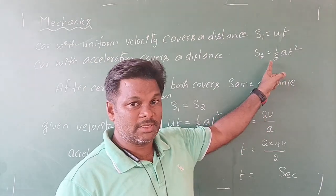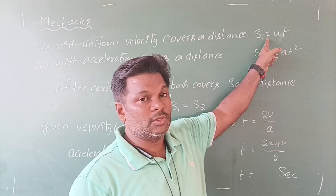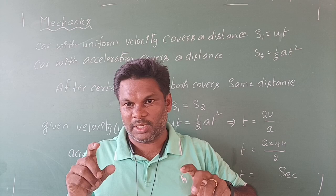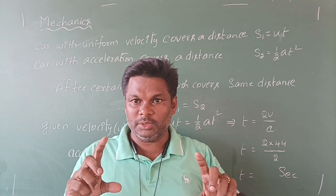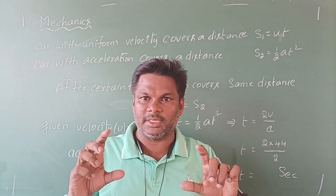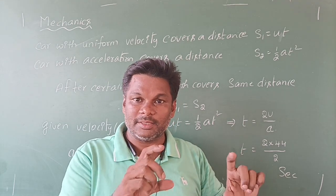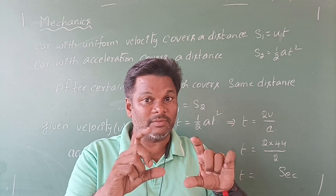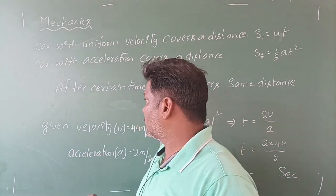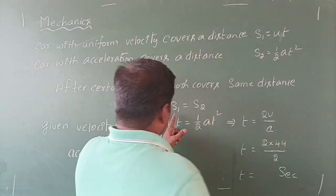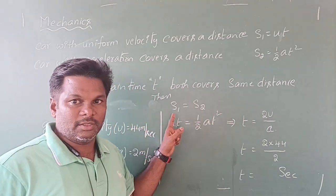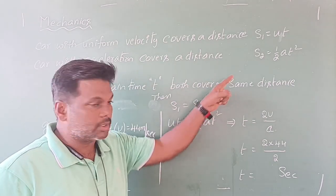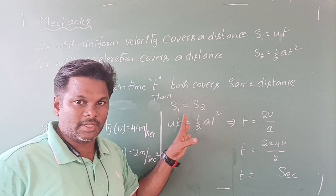These two cars are both in journey — one with uniform velocity and one with acceleration. They both cover the same distance after a certain time. The question asks for the time after which they will meet once again. To find this, we equate the distance covered by both cars: s = ut and s = ½at².